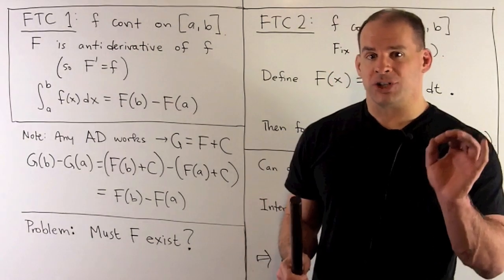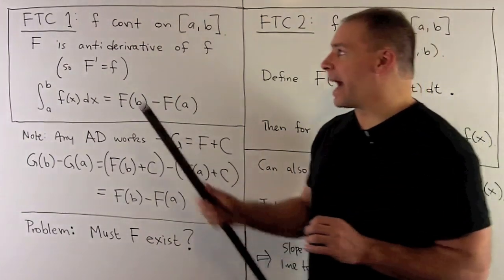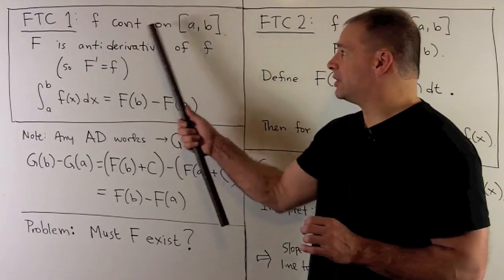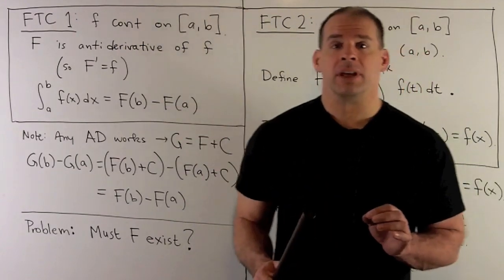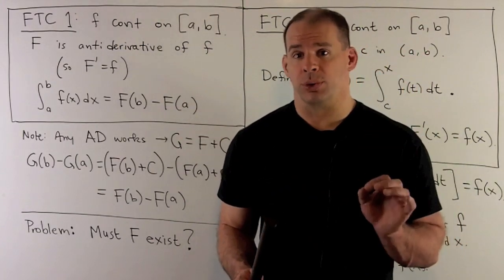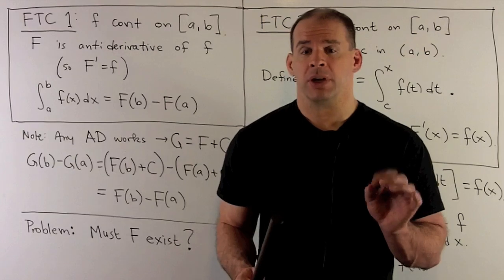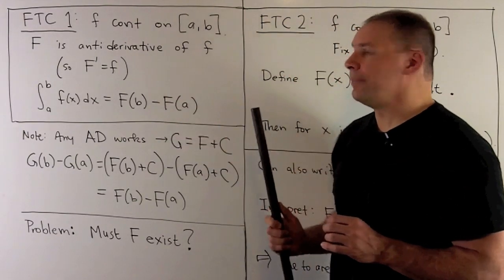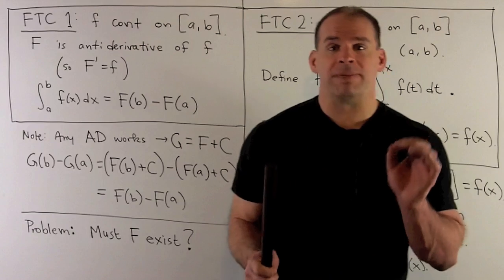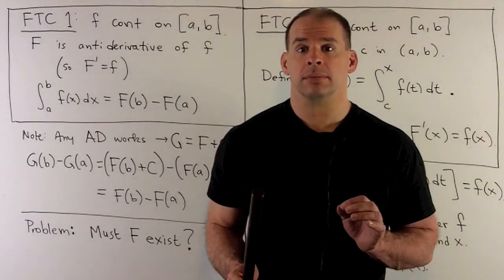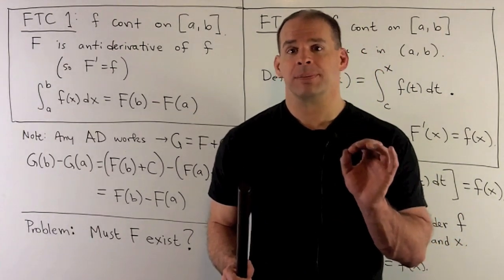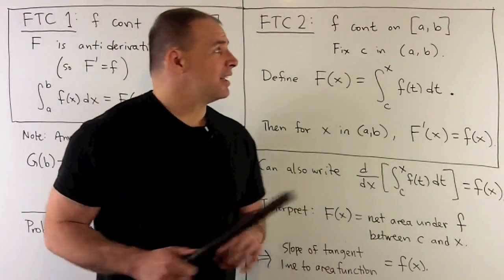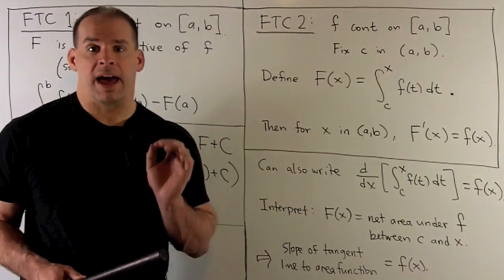The other big question is: if f is continuous on the closed interval [a, b], is there even going to be a capital F to use? The question is whether we can find an antiderivative. The answer is going to be yes — and that's going to be the point of the Second Fundamental Theorem of Calculus.